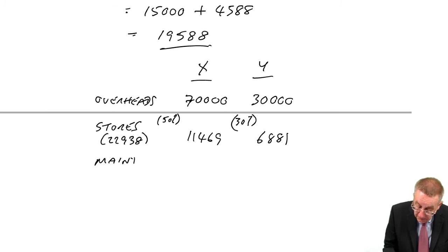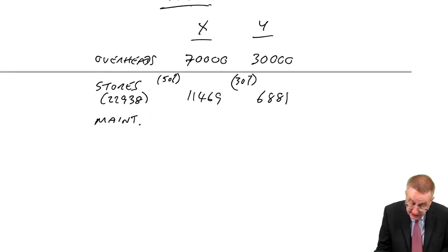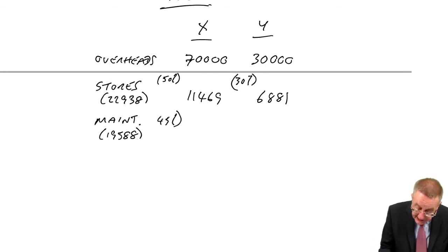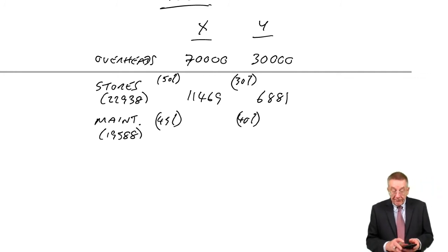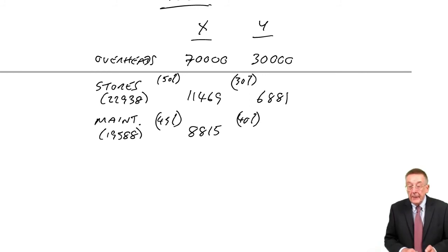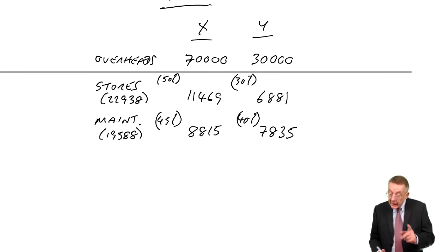Similarly, for maintenance, we take the figure we calculated, 19,588. How does maintenance do the work? 45% is for X, 40% is for Y. Well, 45% of 19,588 is 8,815, and 40% of 19,588 is 7,835. And now we've got it.